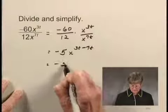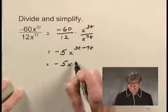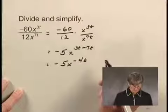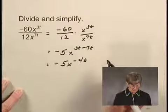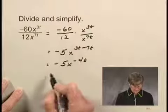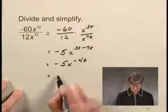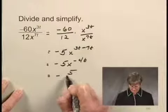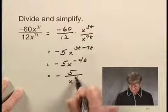And carrying out that subtraction, then I have negative 5 times x to the negative 4t power. And if we wanted to write this without a negative sign in the exponent, we could write it as negative 5 over x to the 4t.